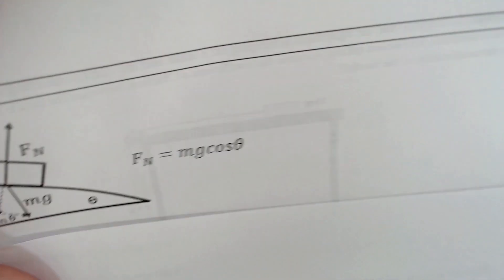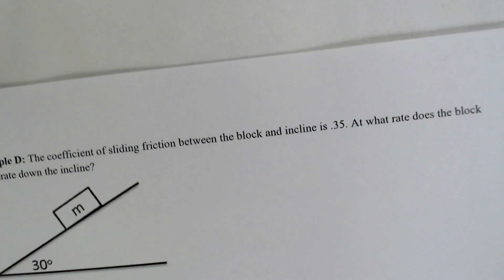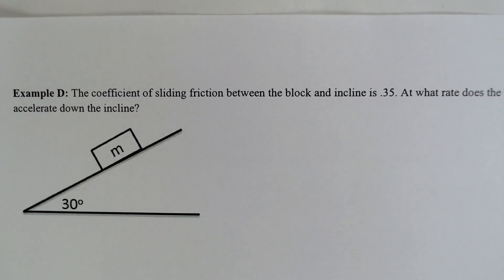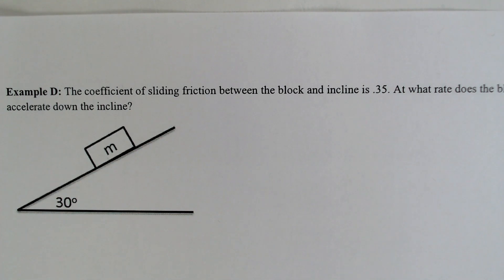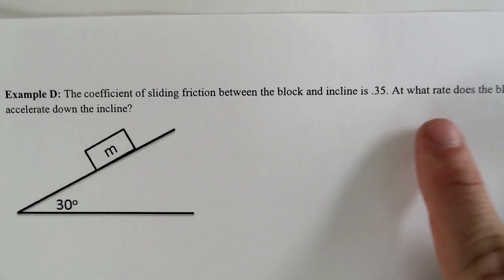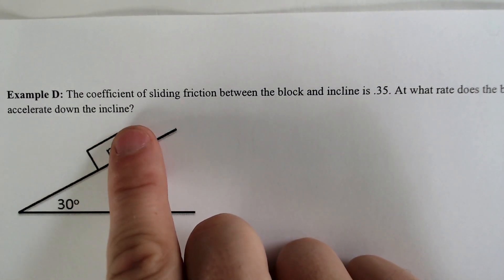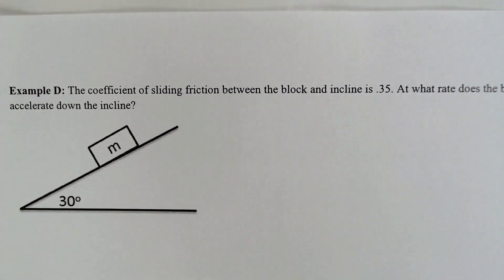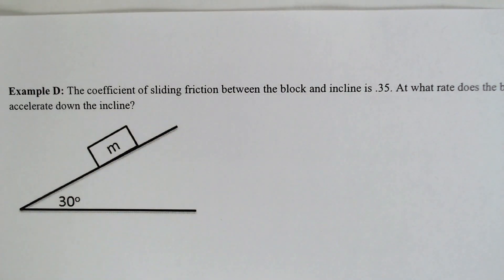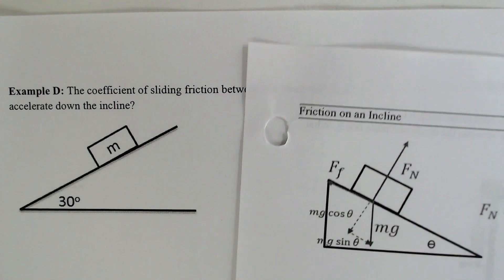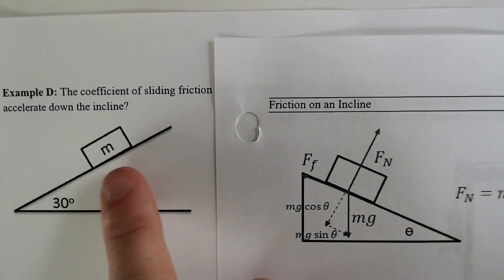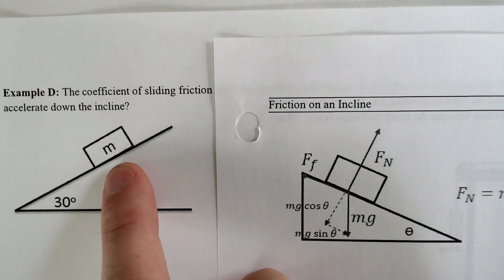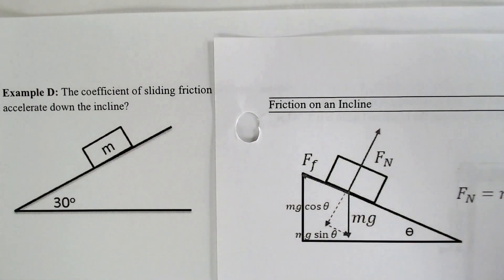With that in mind, we're going to do an example right now. The coefficient of sliding friction — the kinetic coefficient — is 0.35. At what rate does the block accelerate down the incline? This is different for a few reasons: it involves our inclined plane, and normally we're provided the mass, so that might seem like an issue, but we're going to prove that it isn't.